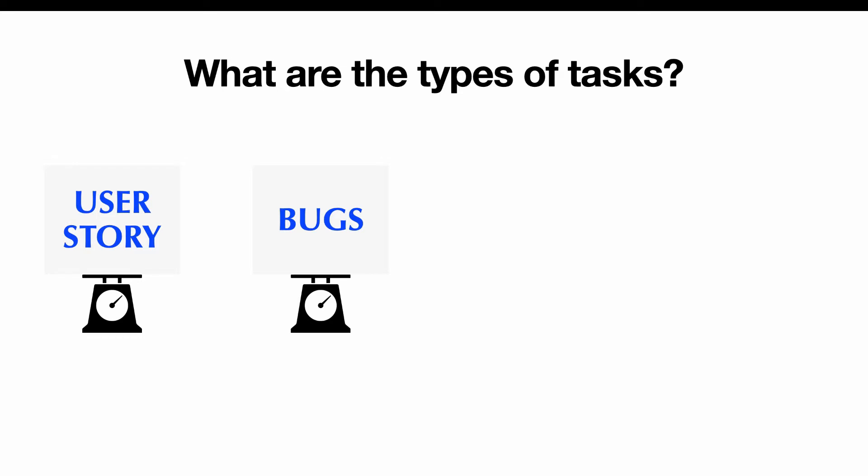The last two types are not as common, but worth including. The first is an epic — it's not really a task per se, but more a way of grouping tasks together, specifically grouping user stories. You can create an epic around a certain topic; for example, if the website wants to implement something that may take three, four, or five months of work, you create an epic and within it put a whole bunch of user stories to break the work up into smaller chunks.